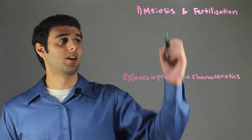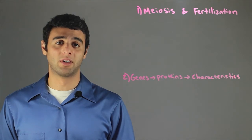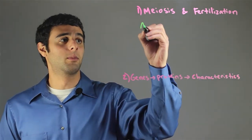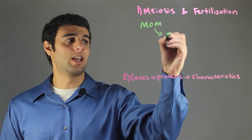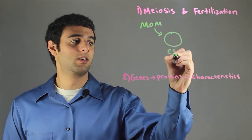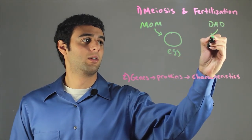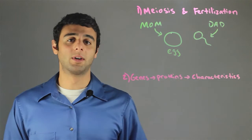Our first concept is meiosis and fertilization. In the process of meiosis, the mom produces an egg, and the dad produces a sperm.